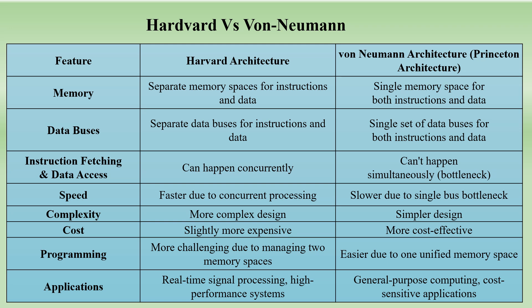Complexity: Harvard is much more complex compared to von Neumann. Cost: because of this complexity, the cost of Harvard is higher. Von Neumann's simpler design makes it more cost-effective. Programming: Harvard is more challenging because it has two memory spaces — you have to code for each memory space to fetch data from memory and send it back to the CPU to decode and execute.